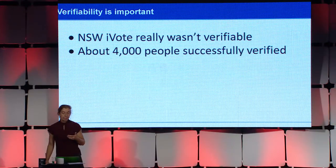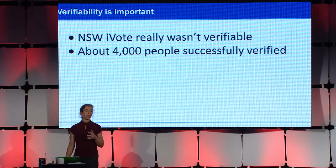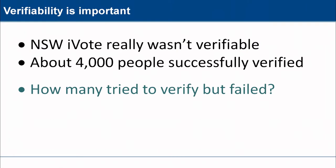The officials who ran the system have said publicly that about 4,000 people verified — that's a little under 2% of the total number of votes that came in off the system. But the verification mechanism, even if it was complete — which I think Alex has argued very well it really wasn't — its value is as an auditing mechanism. So the total number of successes isn't really the relevant statistic. The relevant statistic is the rate of failure — what fraction of the people who tried to verify failed for some reason?